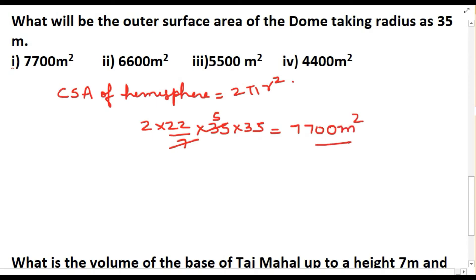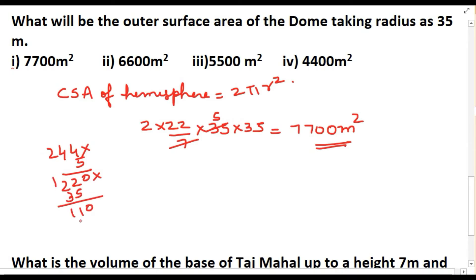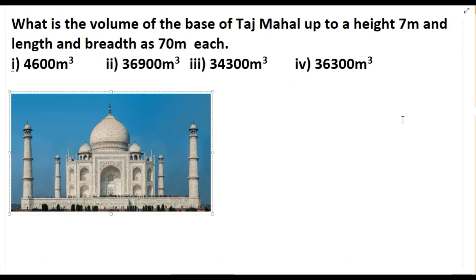That is 2 × 22 = 44, and 44 × 5 = 220. Then 220 × 35 = 7,700 square meters. So the curved surface area of the hemispherical dome is 7,700 m².